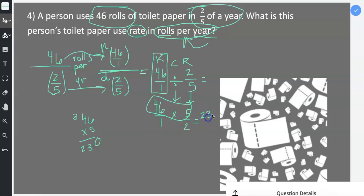If you were doing it in your head, you just think, 40 times 5 is 200, and then 6 times 5 is 30, and 200 plus 30 is 230.